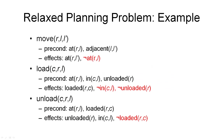Here is the idea of the relaxed planning problem applied to the example we have used earlier. We see the three operators from our simplified dock worker robot domain, where the robots had cranes to load and unload containers. To compute the relaxed planning problem, we simply remove all the delete lists — that is, the negative effects — from all the operators. So we remove not-at(R,L) from the first operator, then not-in(C,L), and not-unloaded(R) from load, and not-loaded from the final operator. It's that simple.